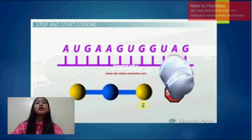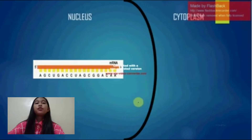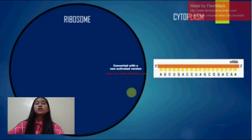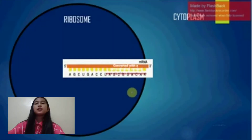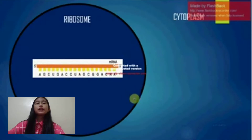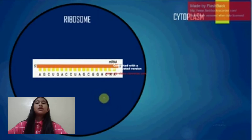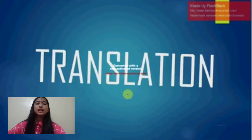Lastly, we'll discuss RNA translation. The mRNA formed in transcription is transported out of the nucleus into the cytoplasm and into the ribosome, the cell's protein synthesis factory, where it directs protein synthesis. Transfer RNA, or tRNA, is required for this. The process by which mRNA directs protein synthesis with the assistance of tRNA is called translation.